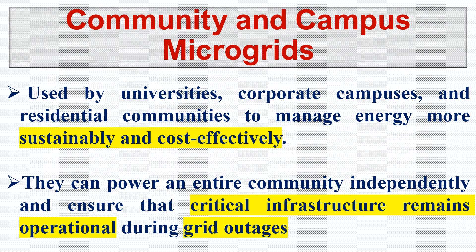The first application is the community and campus microgrid. These are used by universities, corporate campuses, and residential communities to manage energy more sustainably and cost-effectively. Universities generate their own power using solar panels, batteries, and other renewable resources like small wind turbines. It is easy for them to create a microgrid, which helps reduce energy expenses.